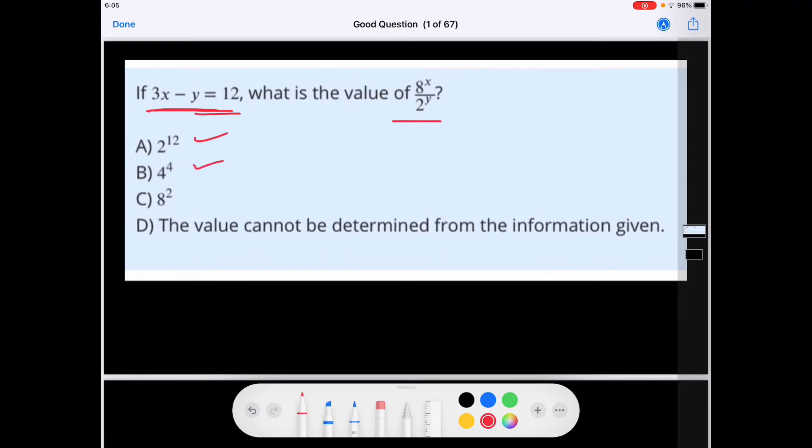4 raised to the power of 4, 8 raised to the power of 2, and option D is the value cannot be determined from the information given.